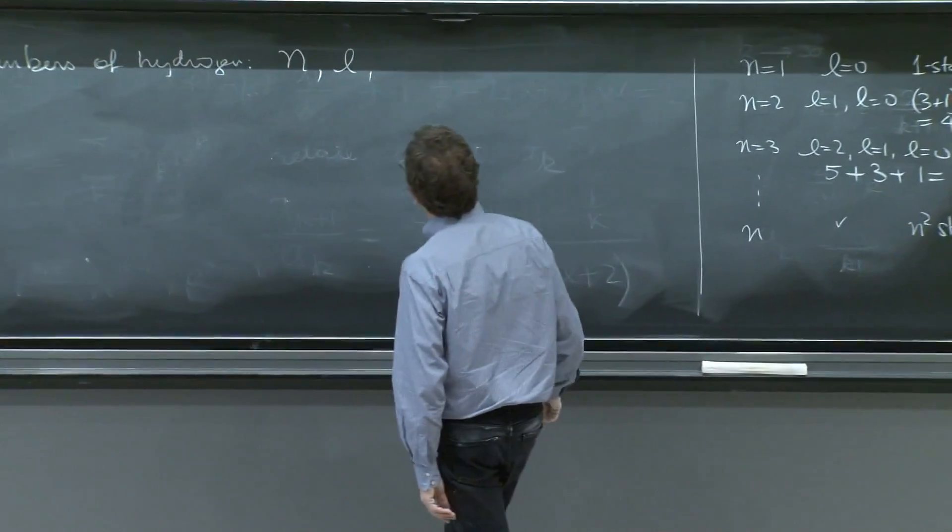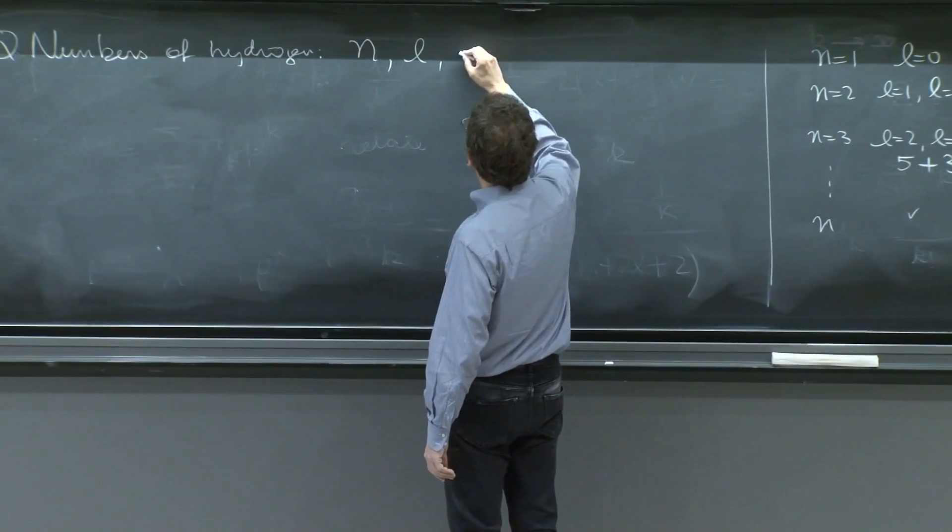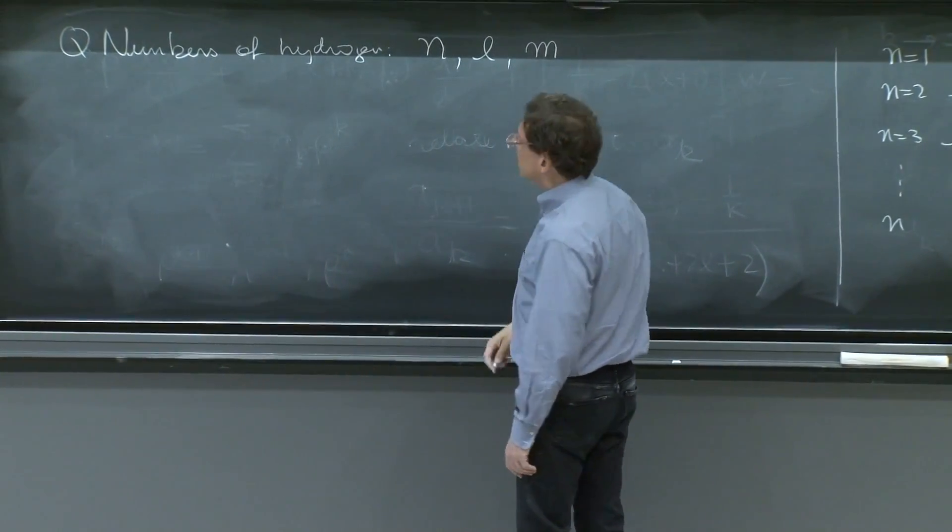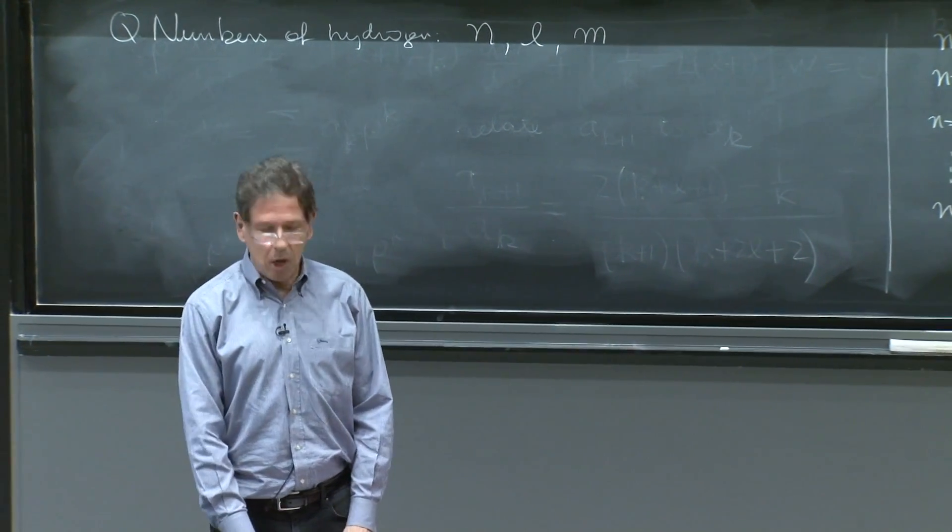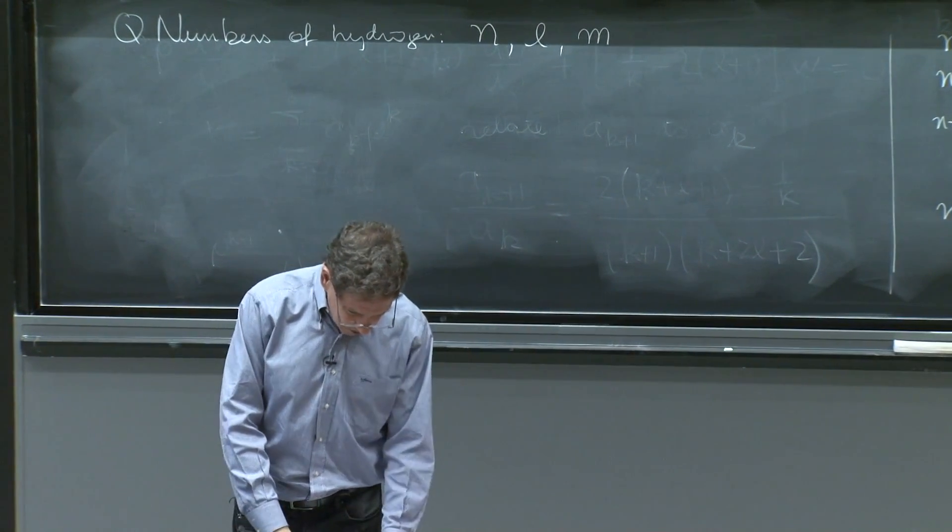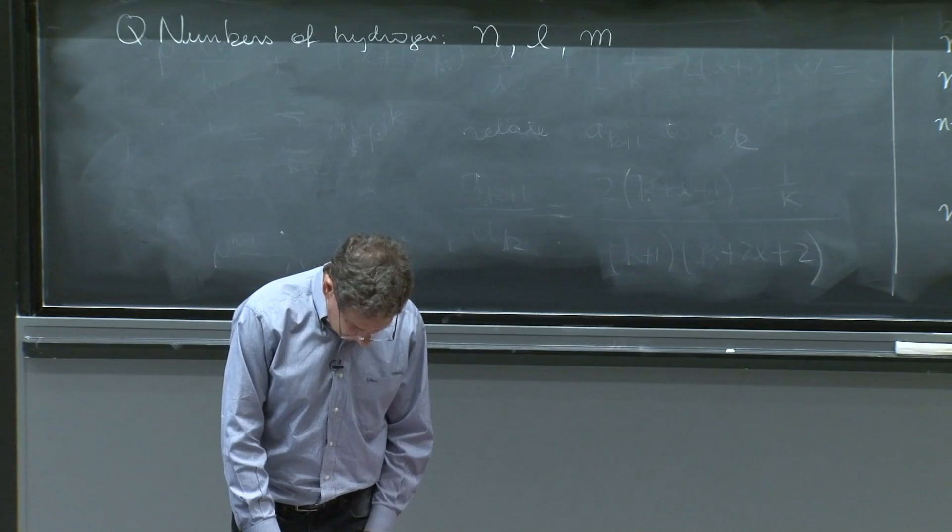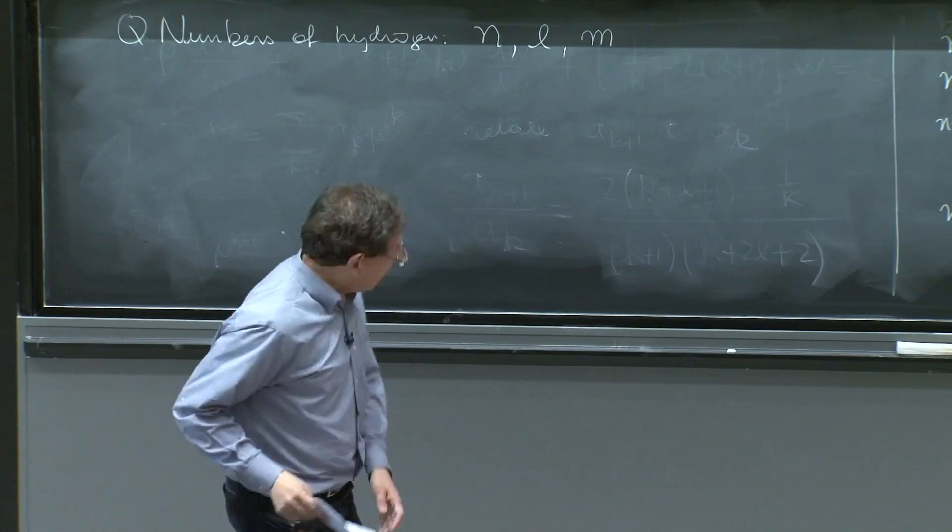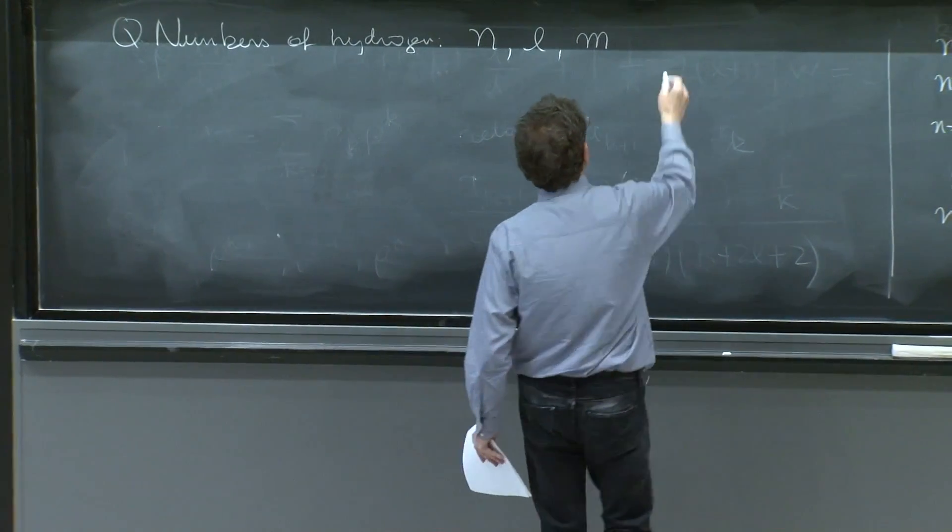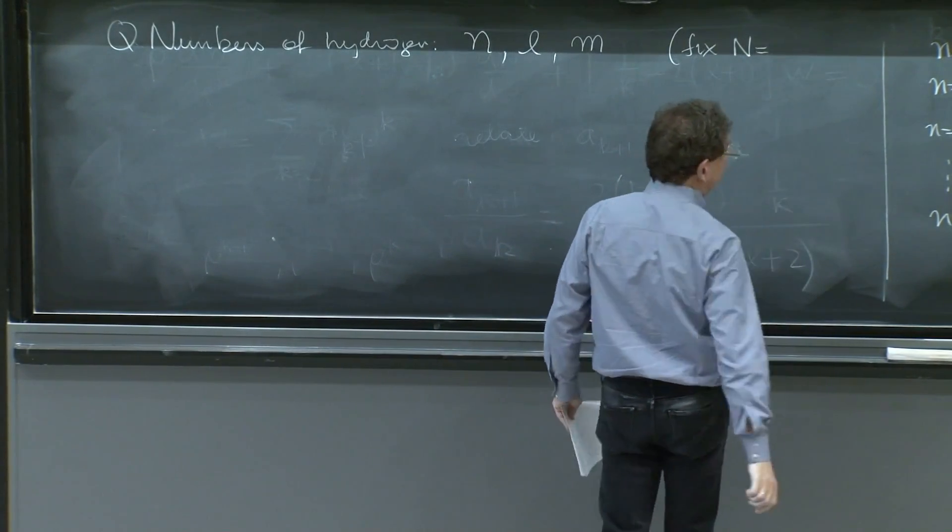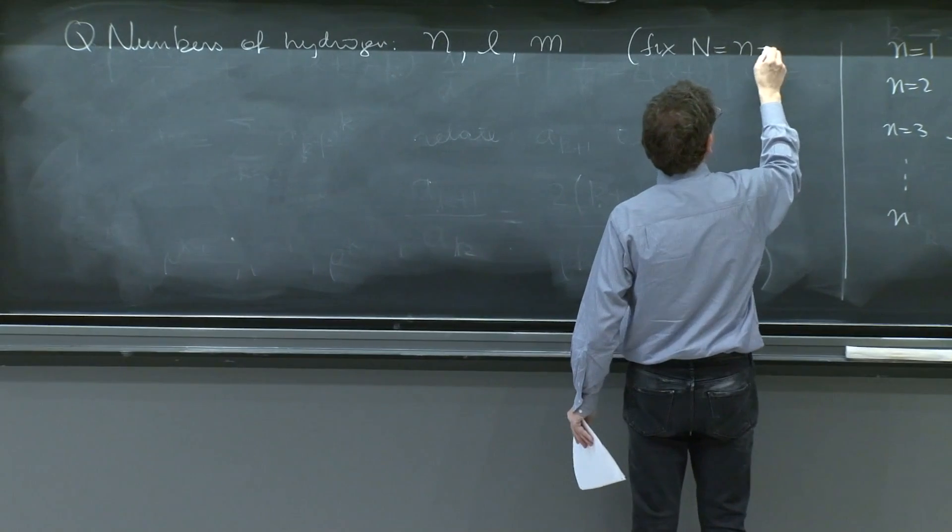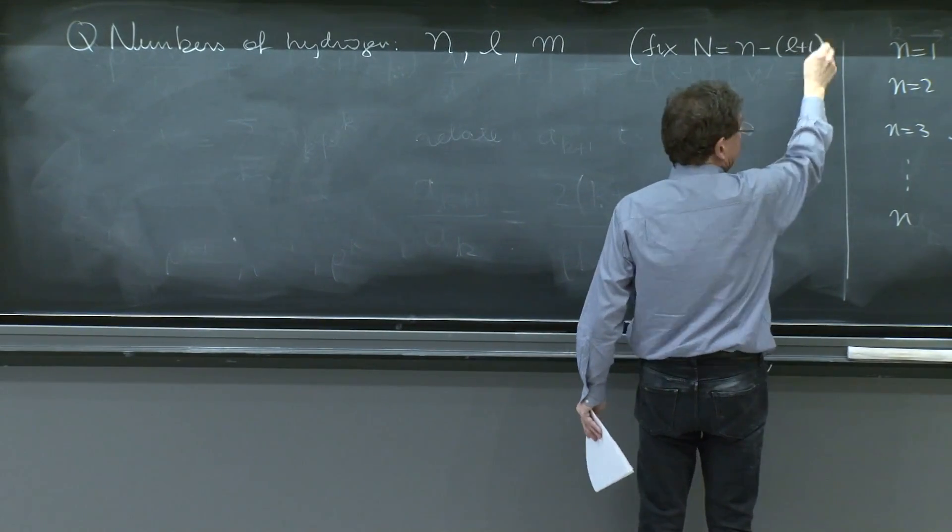And the third quantum number is unavoidable. It's the z component of angular momentum. Should be m. That's also physical, and we should not skip it. So these are our quantum numbers. And they fix capital N, in case you're interested, as n minus l plus 1.